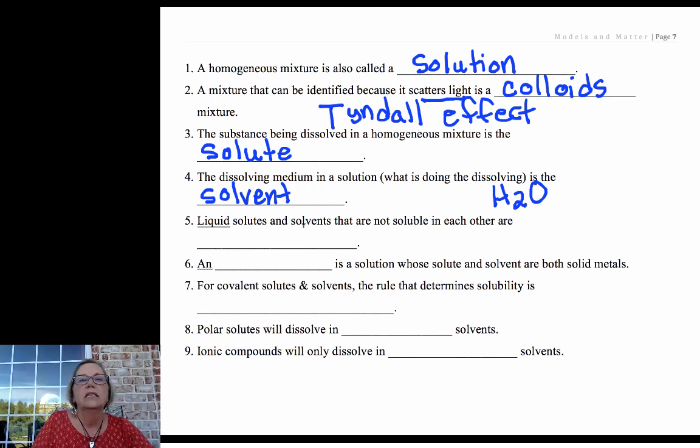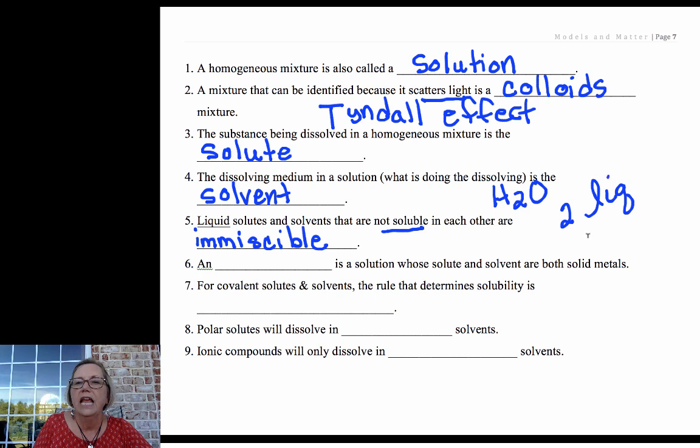Liquid solutes—if we're talking about liquid solutes and solvents that are not soluble—they are called immiscible, just a few vocab words here. If they are—if two liquids are soluble in one another—we would call them miscible. So I like to say if they're mixable, they're miscible.